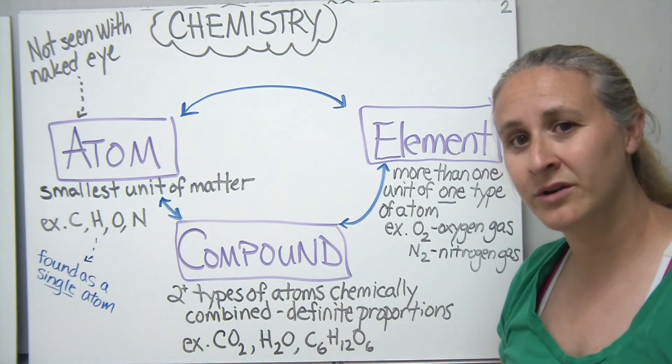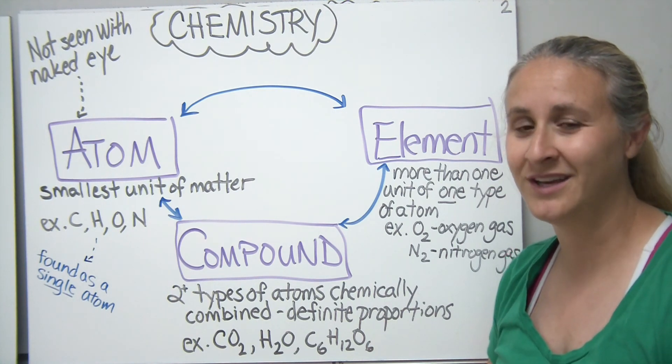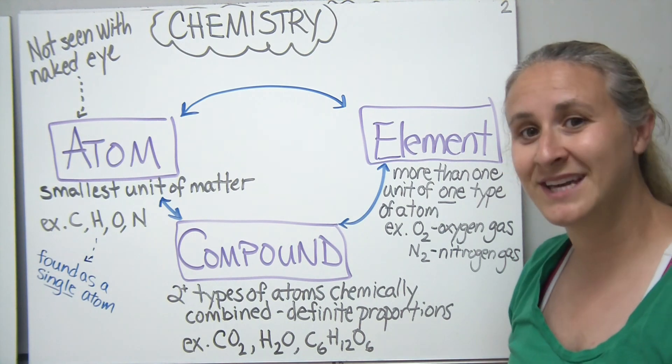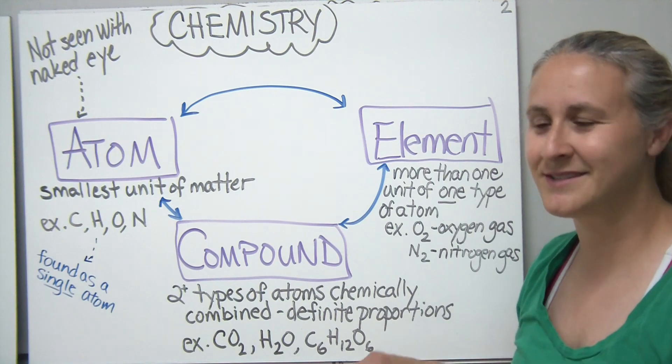In the case of water, we have two hydrogen atoms bonded to one oxygen. And then we get into some more complex things like glucose, which happens to have six carbons, 12 hydrogens, and six oxygens.